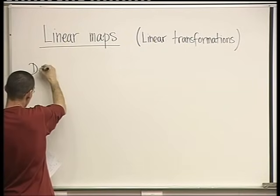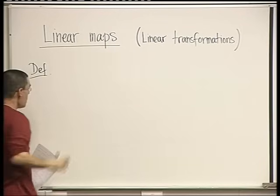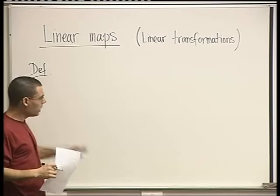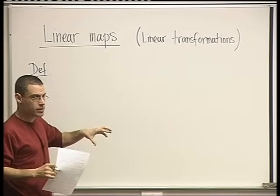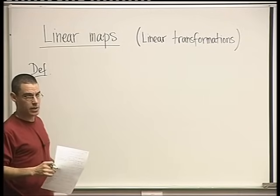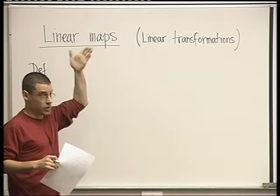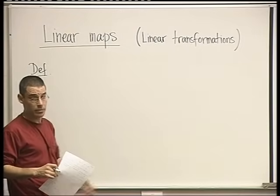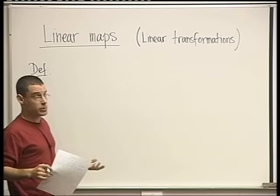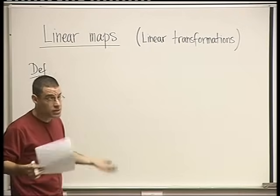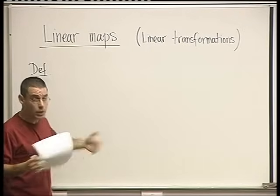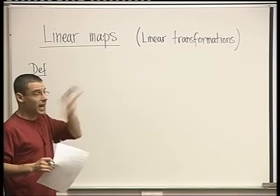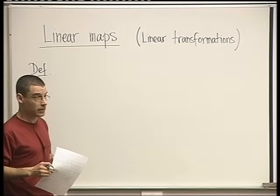So first, here's the definition. So far, everything we did, we always worked in the context of a specific vector space. The vector space was sometimes just Rⁿ — n-tuples thought of as row vectors or column vectors. Sometimes the space was a space of matrices, sometimes a space of polynomials. But always a single vector space.